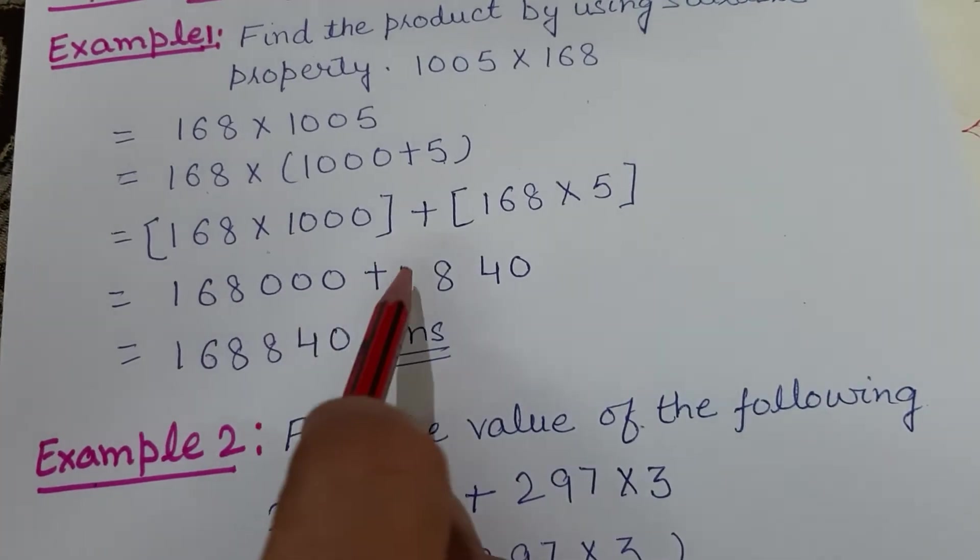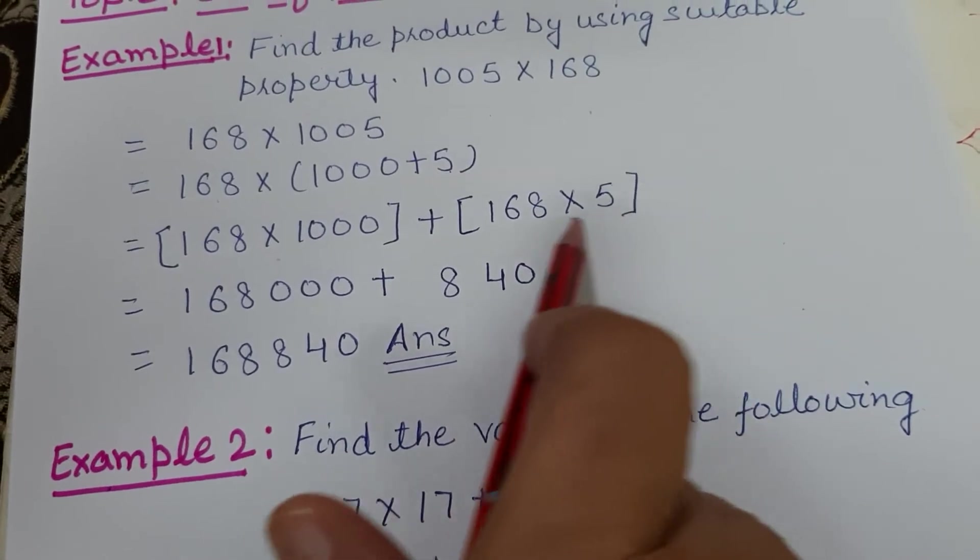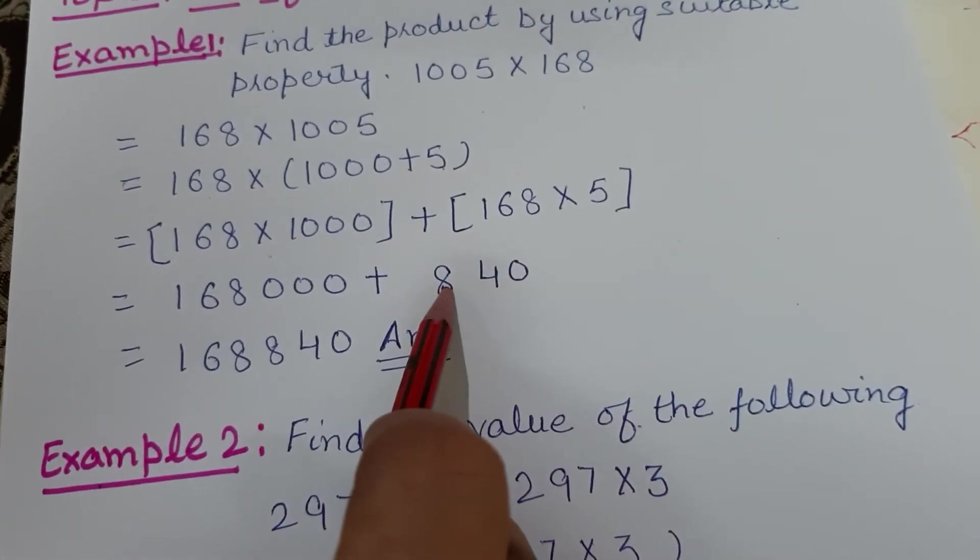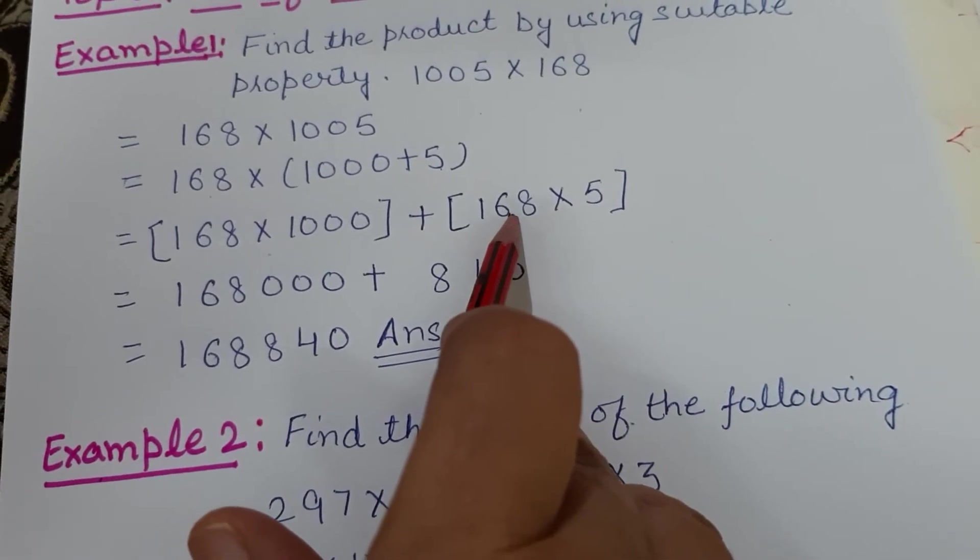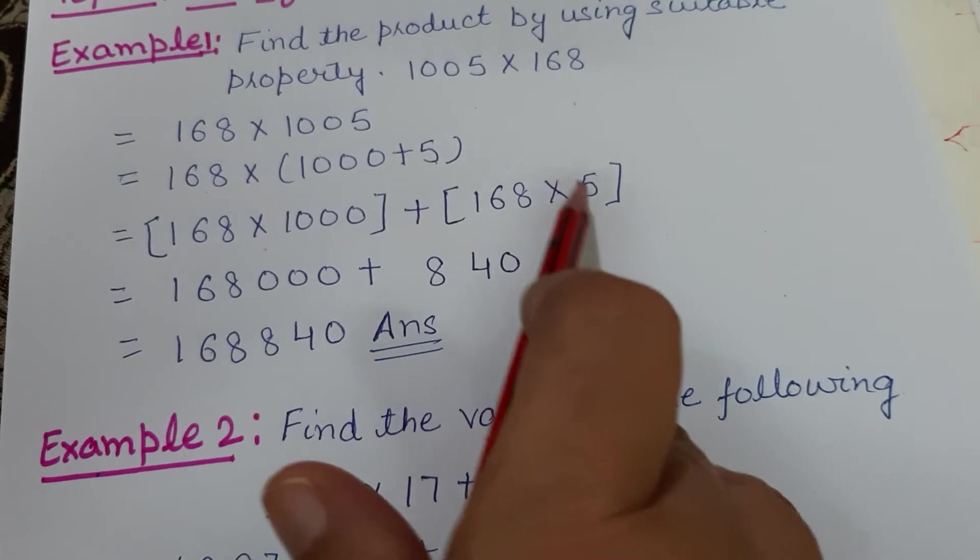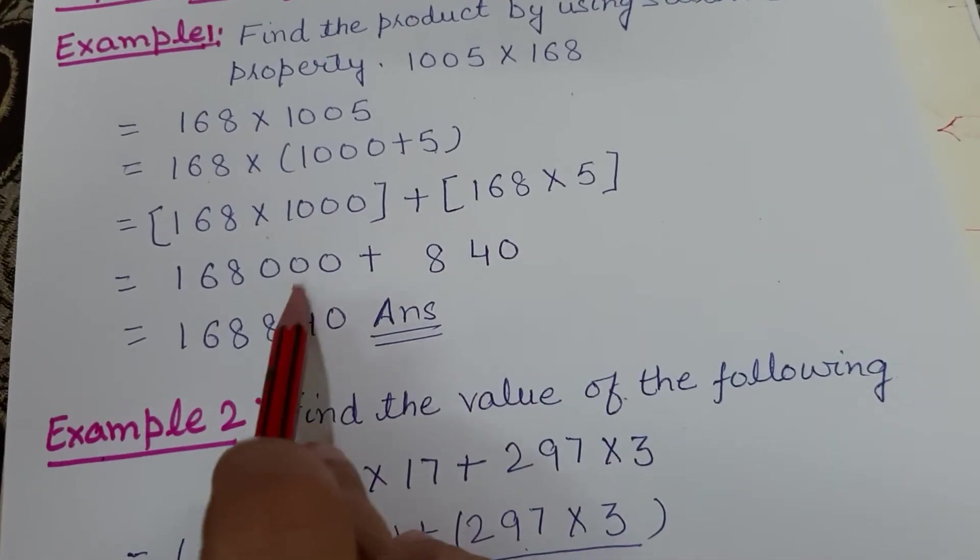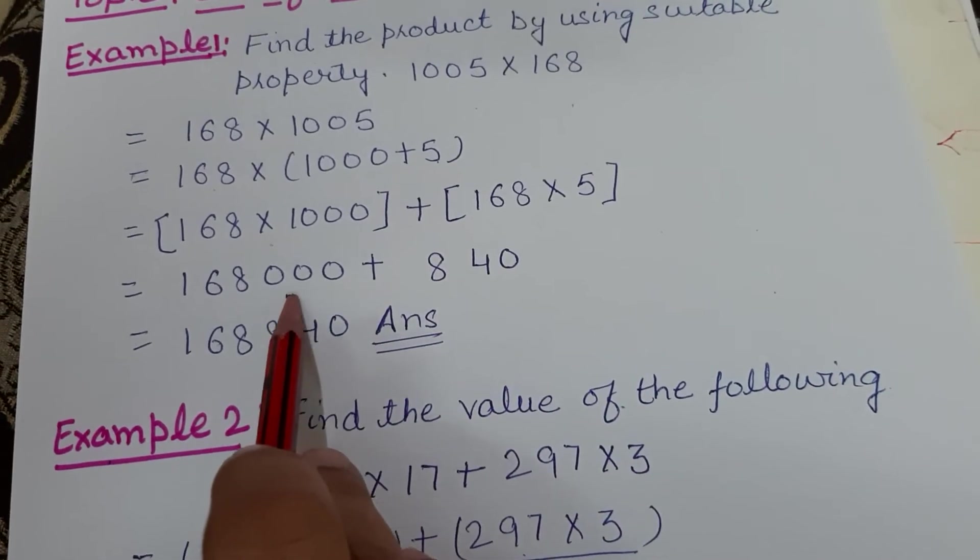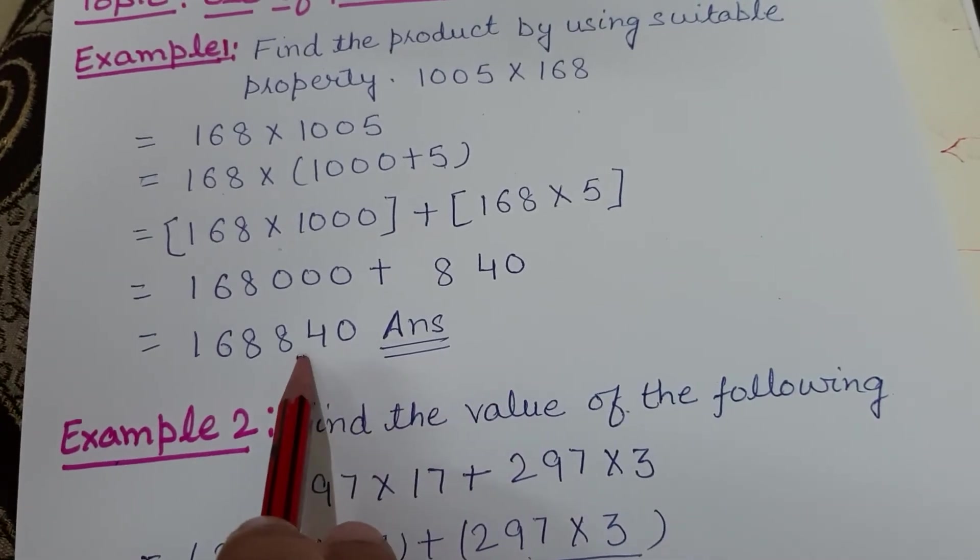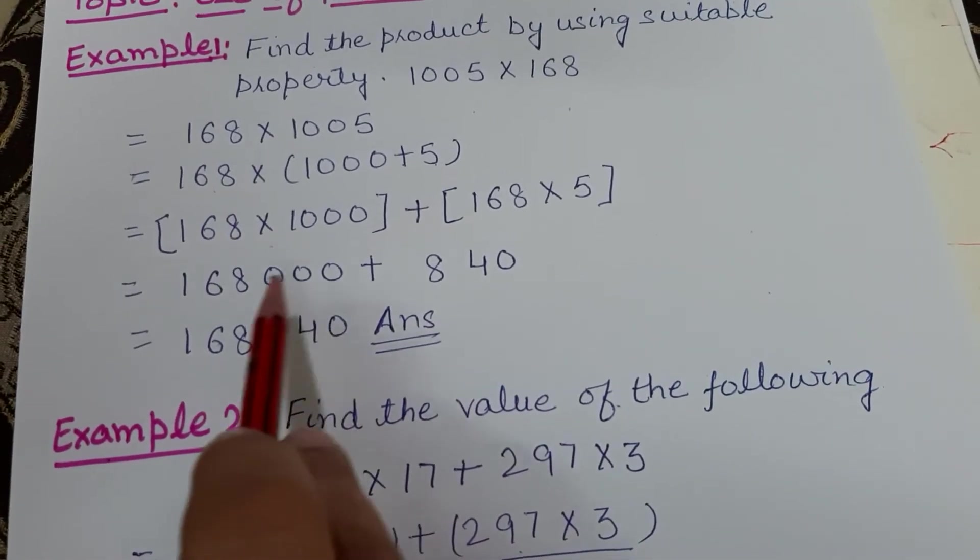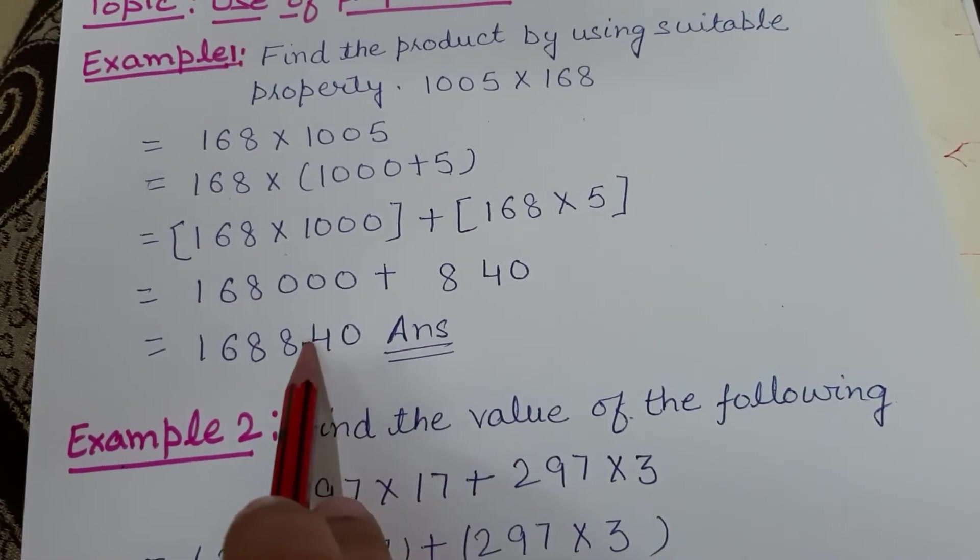Write 4, carry 4. 5×6 is 30, plus 4 is 34, write 4, carry 3. 5×1 is 5, plus 3 is 8. So 840. Now when you add these, see, in the last three places are zeros, so simply we can write these three digits with this number.